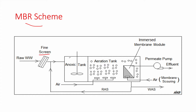After the fine screening, we have the anoxic tank, also called the pre-denitrification tank. It consists of a mixer and there is no injection of air — no aeration in this tank. Then we have the aeration tank with diffusers, and of course blowers to inject air within this aeration tank.